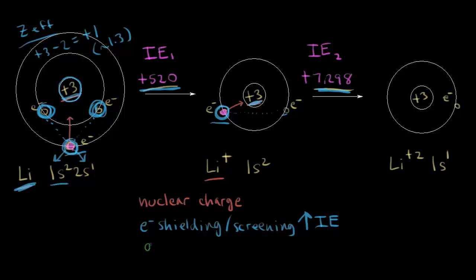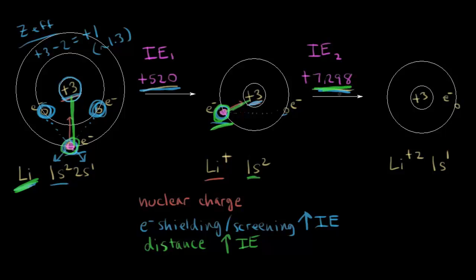The last factor is distance — the distance of those electrons from the nucleus. Going back to the neutral lithium atom, the outer electron is in the second energy level, so it's further away. The electron in the lithium +1 cation is in the first energy level, in the 1s orbital, so that distance is smaller. Since the distance is smaller, this electron feels more of an attractive force from the nucleus — that's Coulomb's law — so there's an increased attractive force, and therefore it takes more energy to pull that electron away.